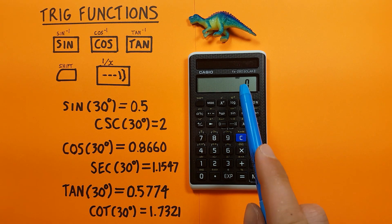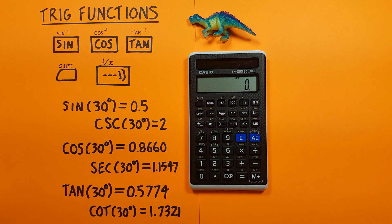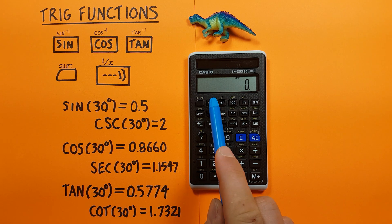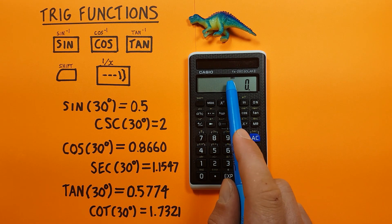You can see mine says RAD at the top there, meaning it's set to radians. If we want to shift our calculator into degrees, what we do is we press mode and then four, and you can see DEG has appeared on the top of our screen now.